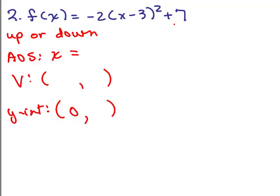All right. The coefficient this time is negative 2, so a is negative 2. So this one goes down.